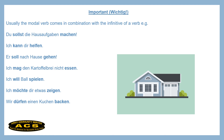I mentioned before that usually you use modal verbs in combination with another verb, but you don't have to. If something is pretty obvious and you know what you're talking about, you can skip the infinitive. For example, if I'm in a restaurant and I say 'Ich möchte ein Bier,' the waiter or waitress knows that you want to order a beer — you don't have to say 'order' in German.